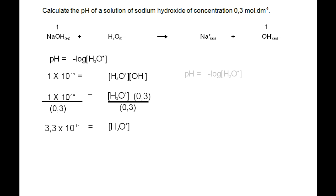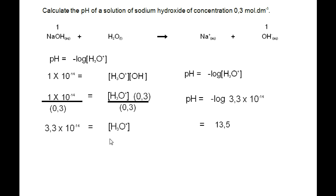Substituting into the pH equation: pH = -log(3.3×10⁻¹⁴) = 13.5. This makes sense because sodium hydroxide is a strong base, and 13.5 is close to 14. In summary, two key equations are needed: pH = -log[H3O+], and Kw = [H3O+][OH-] = 1×10⁻¹⁴.